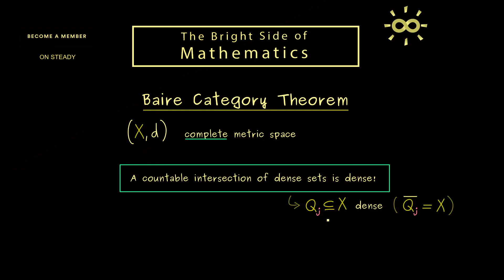A typical example would be that the complete metric space is given by the real number line R and the dense subset could be the rational numbers Q. In other words, each point in X can be approximated by a sequence in Q_j. And now if this fact holds for all j, we have the implication that it also holds for the intersection. But it should be a countable intersection. So j could run from 1 to infinity.